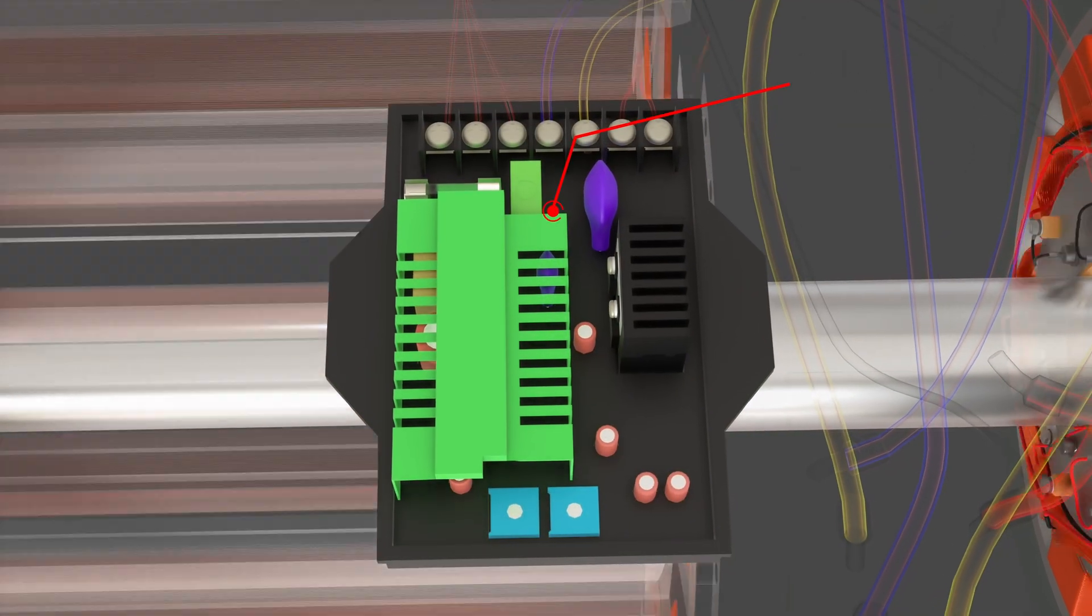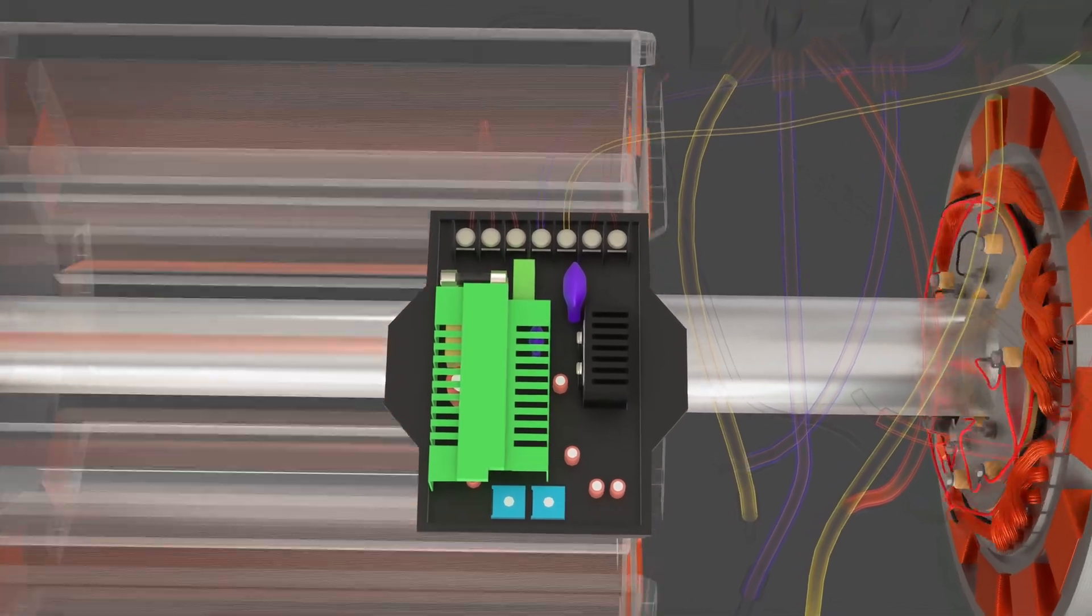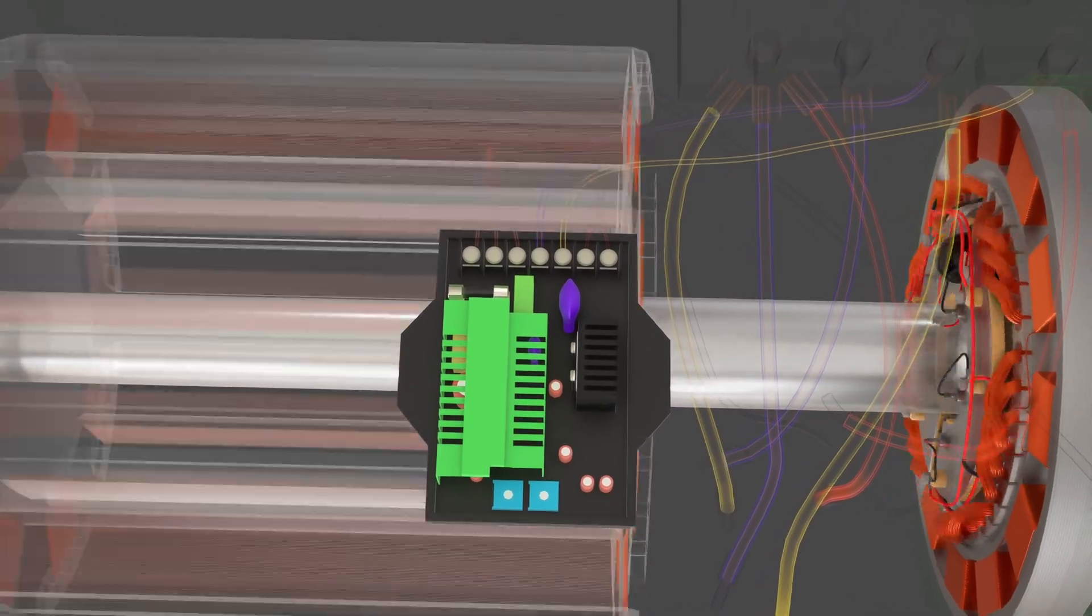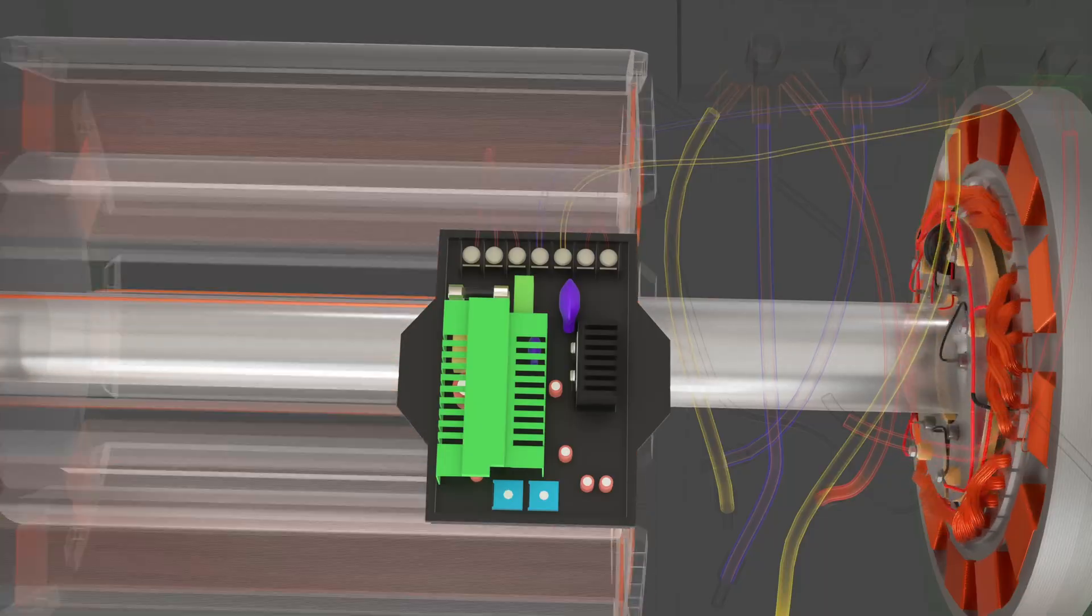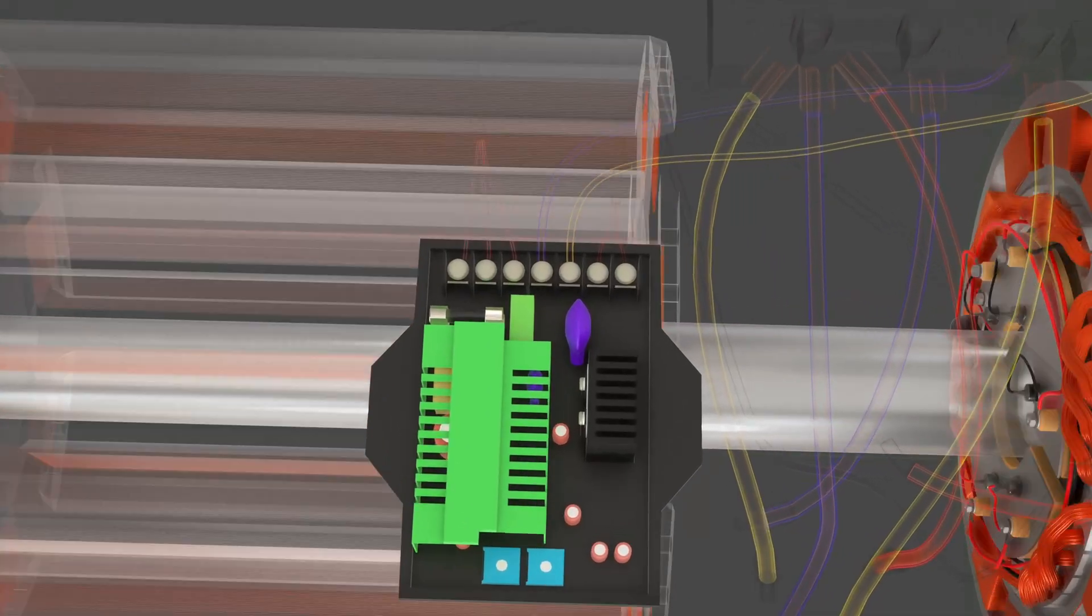The most important function of the AVR is to automatically control alternator voltage and maintain constant output at the appropriate voltage level, regardless of the current being drawn by the load. This ensures that connected equipment receives a stable power supply.